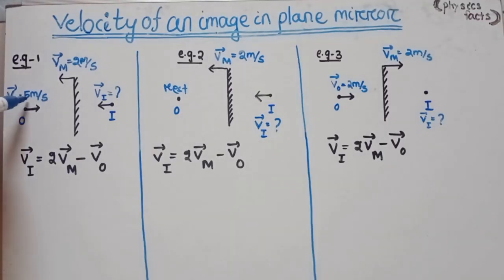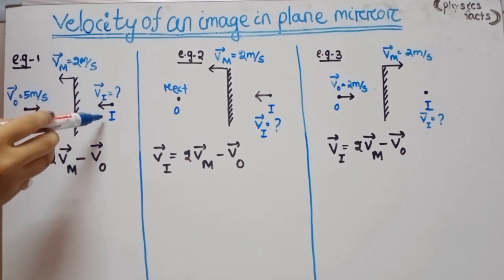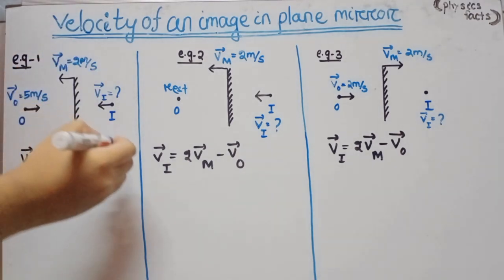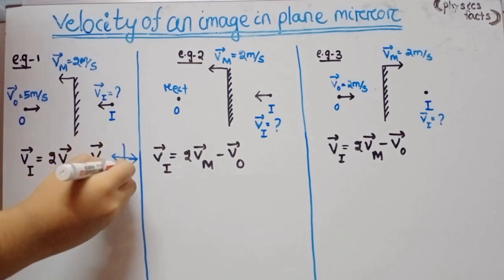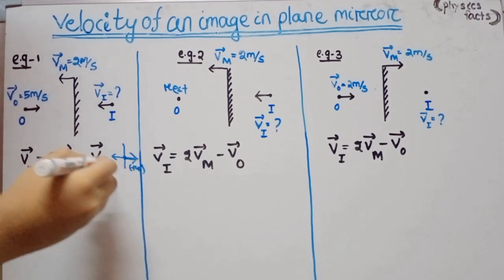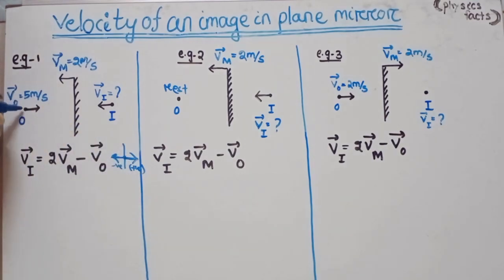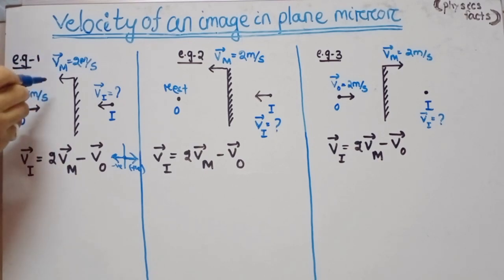Question: Vo = 5 m/s, Vm = 2 m/s with the mirror moving towards the object. Using Vi = 2Vm - Vo, and noting sign convention: motion toward the mirror is positive, opposite direction is negative. The mirror moves toward the object, so Vm = -2. Thus Vi = 2(-2) - 5 = -4 - 5 = -9 m/s.